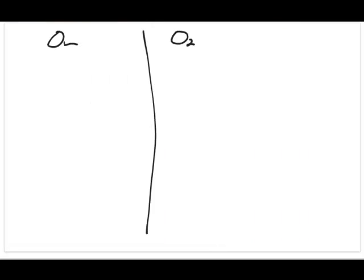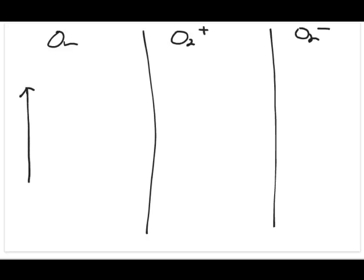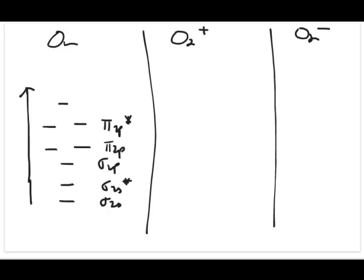We're going to have three diagrams: O2, O2+, and O2 minus. Remember that for oxygen, you draw the energy diagram with sigma first before pi: sigma 2s, sigma 2s star, sigma 2p, pi 2p, pi 2p star, and then sigma 2p star. Then repeat it for the other species as well.